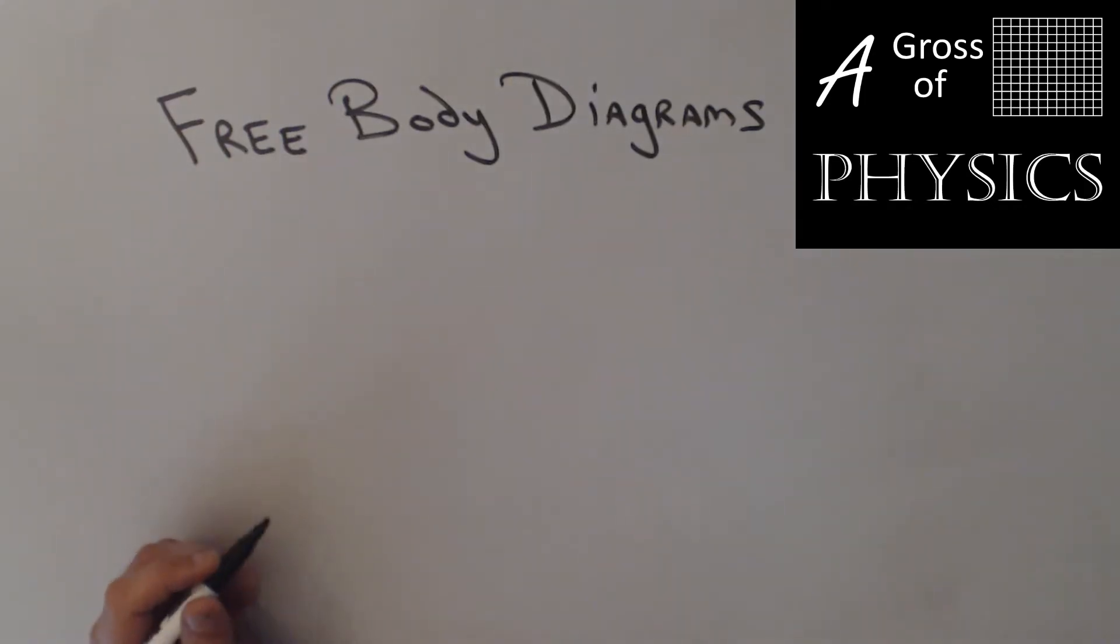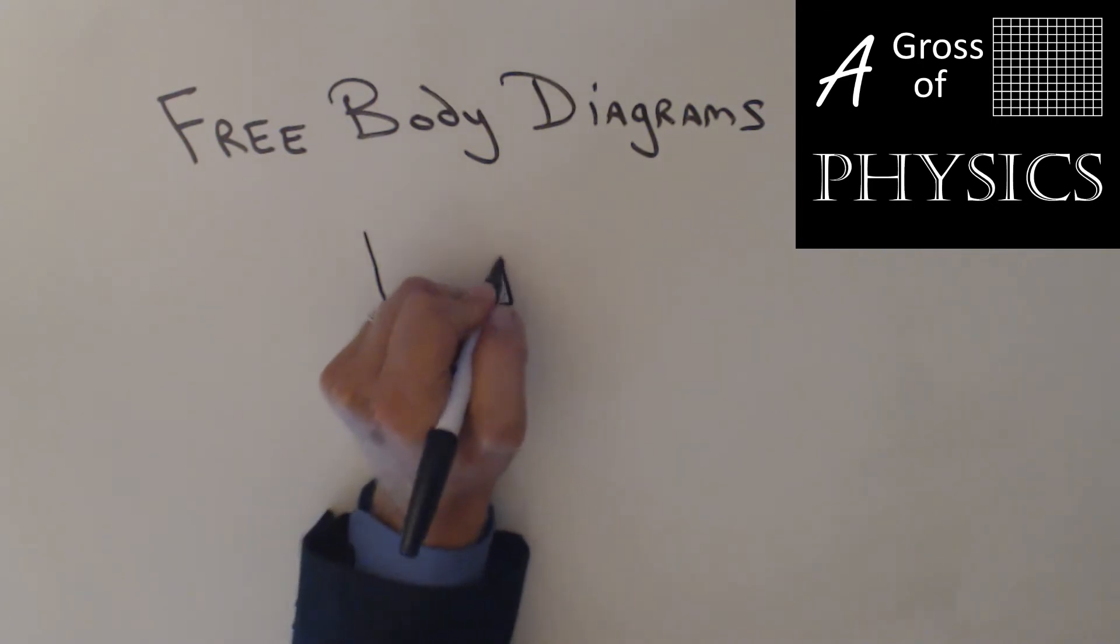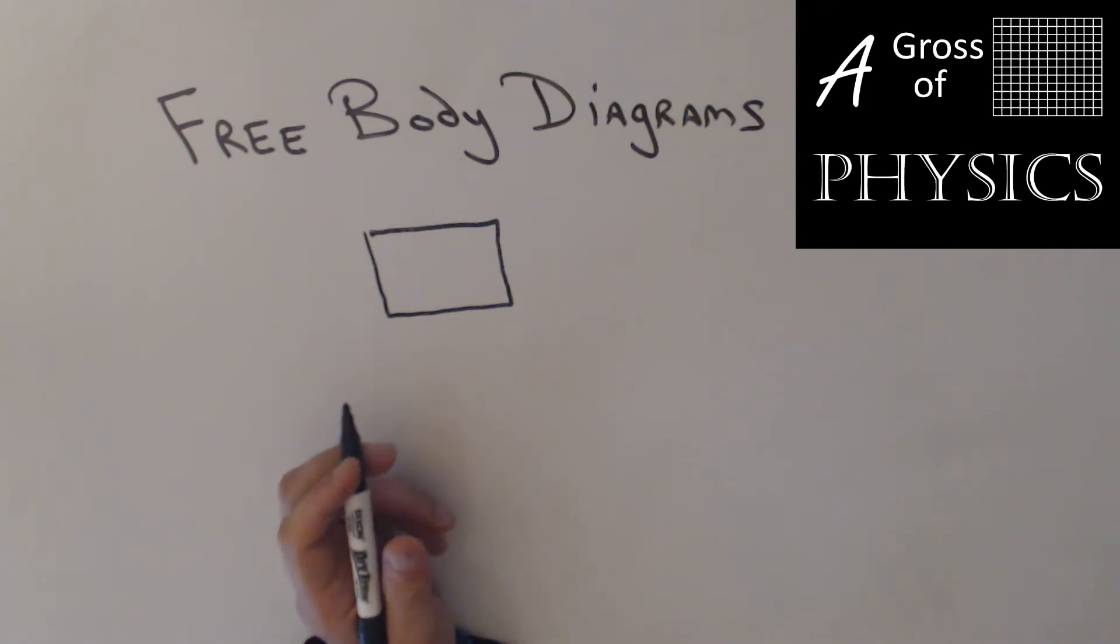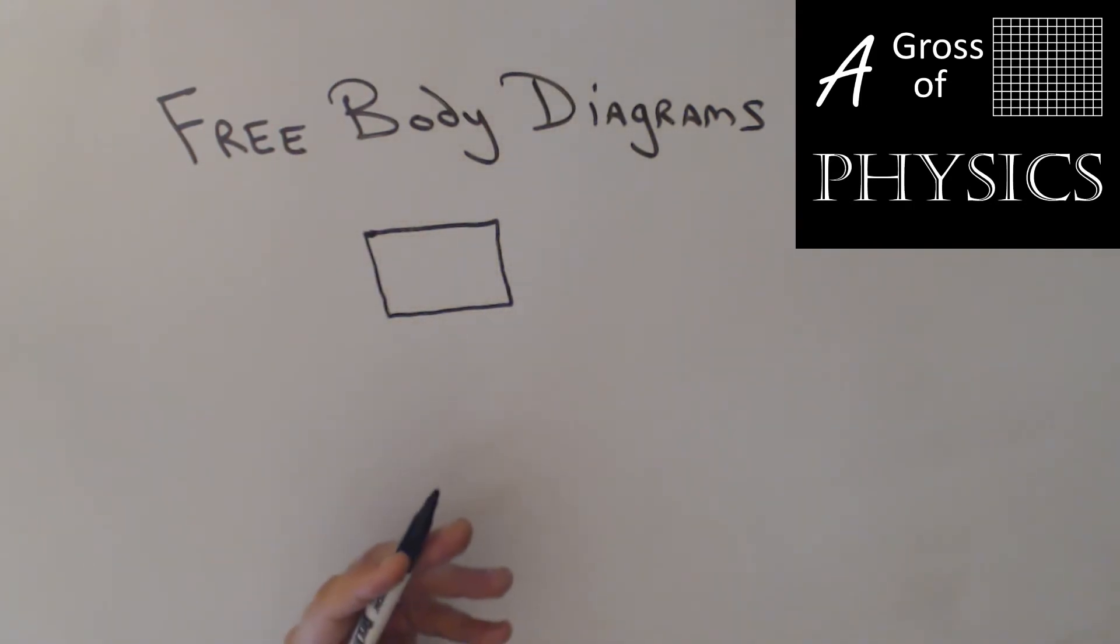So free body diagrams are visual representation of all the forces acting on an object. Now the first thing to note is that we're always going to use a rectangle. And that's so that if we have an oddly shaped object, it may look like there are forces acting on it that don't actually occur. If we always stick to the same shape for everything, then it's going to allow us to visualize the forces without being concerned with our artistic ability. Besides, my artistic ability as you've seen is pretty weak, so this makes it easier for me as well.